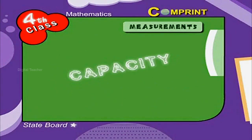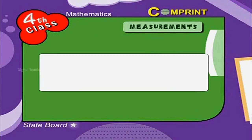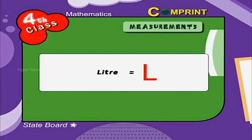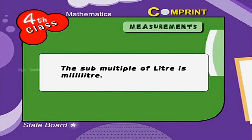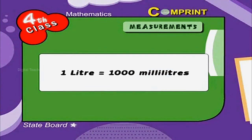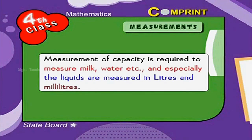Measurement of Capacity. Liter is the standard unit for measuring capacity or volume. The short form of liter is L. The sub-multiple of liter is milliliter, and the short form of milliliter is ml. 1 liter is equal to 1000 milliliters. Measurement of capacity is required to measure milk, water, and other liquids, which are measured in liters and milliliters.